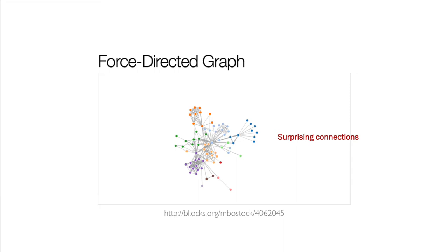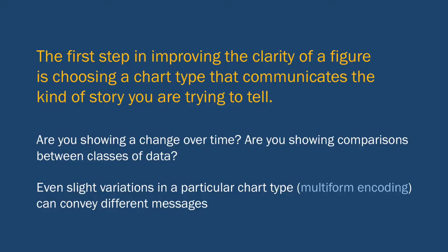We have force-directed graphs or network diagrams — these are also good for showing surprising connections between data points. All of these storytelling devices are important to framing our understanding of the purpose of a visualization. And the first step in improving the clarity of any visualization we design is choosing a chart type that communicates the kind of story you're intentionally trying to tell. Are you trying to show a change over time? Are you trying to show comparisons between different classes of data? These different kinds of devices have consequences for how we design a visualization.